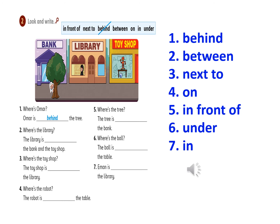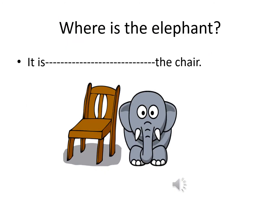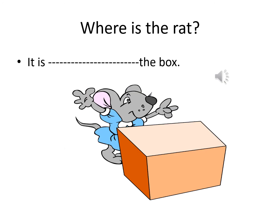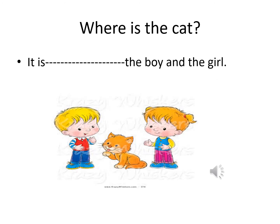Now please bring your note book. Write these questions and write the answers. Where is the elephant? It's next to the chair. Where is the rat? It's behind the box. Where is the cat? It's between the boy and the girl.